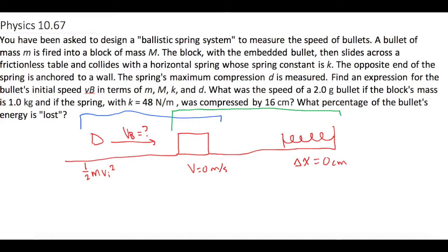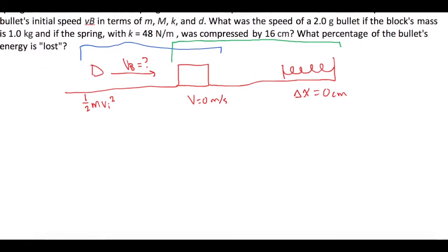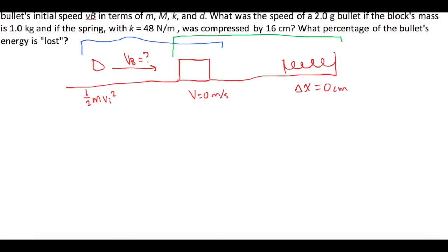Let's look at the bullet and the block. We need to figure out what speed they move with after the bullet hits the block, so let's use conservation of momentum. The bullet has some initial speed: little m times v1 for the bullet, plus big M times v2 for the block, equals little m plus big M — after they collide and the bullet embeds itself in the block — times their combined velocity.